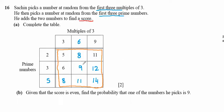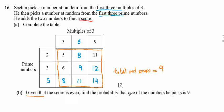There are nine total outcomes — three times three equals nine. This completes the first part of the question. The second part uses conditional probability: given that the score is even, find the probability that one of the numbers he picks is nine.